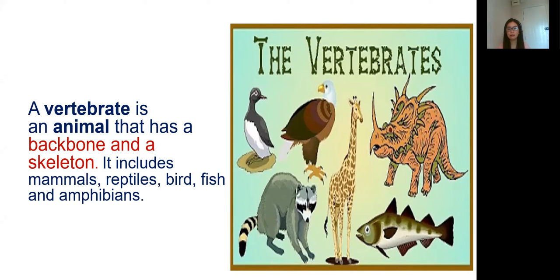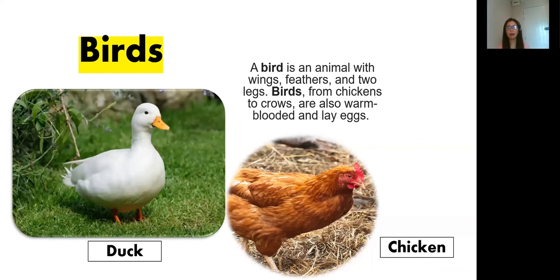So we will talk about vertebrate animals. What you can see on the screen are examples of vertebrate animals. So what is a vertebrate animal? A vertebrate is an animal that has a backbone and has a skeleton. It includes mammals, reptiles, birds, fish, and amphibians. Always remember: backbone and skeleton.